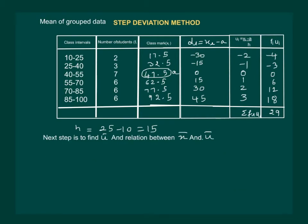Next step is to find ū, which is given by ū equals summation of Fi times UI, whole divided by summation Fi. Summation Fi is 30. So our ū is given by 29 divided by 30.